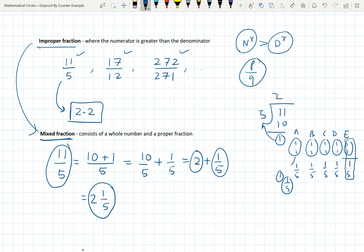And that's why, what is the part which is received by everyone? It is 2 and 1 by 5th. So 11 by 5 and 2 and 1 fifth are not two different numbers. They are same. But here we are writing it in the form of numerator and denominator. And in this case, we are writing it in the form of integer plus proper fraction.